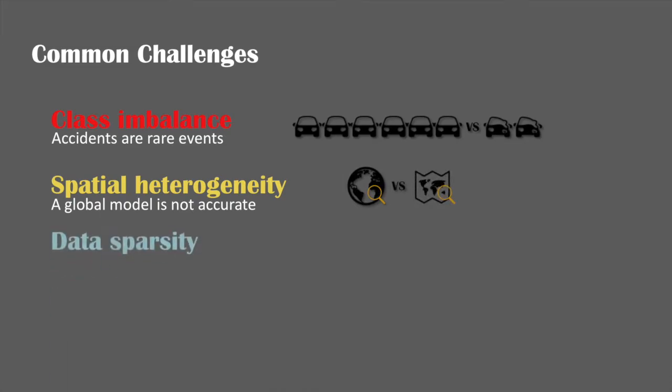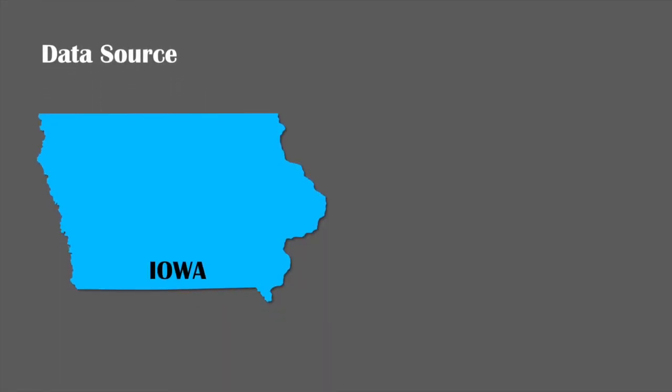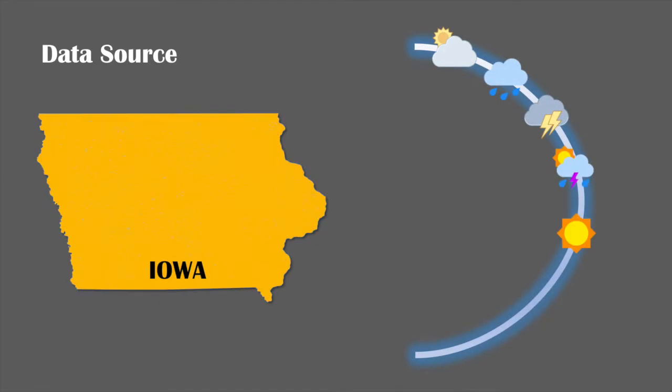The third challenge is data sparsity. For roads in rural areas, they have very few accidents comparing to the roads in urban areas. Iowa is a state with both rural and urban environments, and it is ideal for studying traffic accidents due to its varying weather conditions.